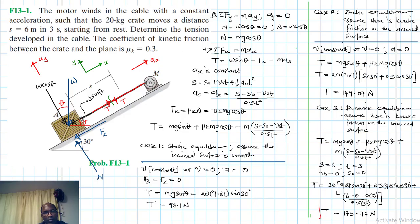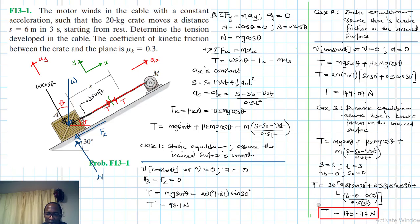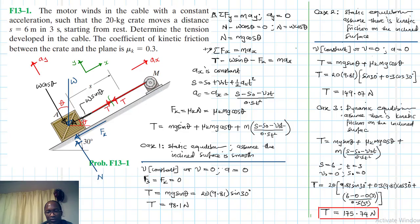This is our final solution. We've seen how the acceleration itself increases the tension: 98.1 N with no friction, 149.07 N with friction but no acceleration, and 175.74 N when we include both friction and acceleration in the last case. I hope this video was helpful — if it was, give me a thumbs up, continue subscribing and sharing my channel. Bye bye, and I'll see you in my next screencast.